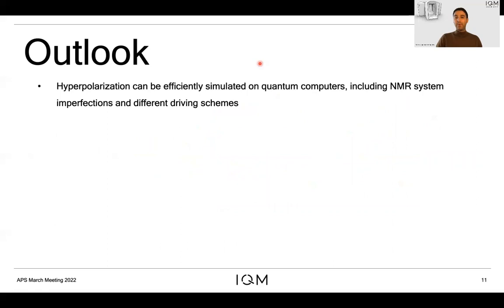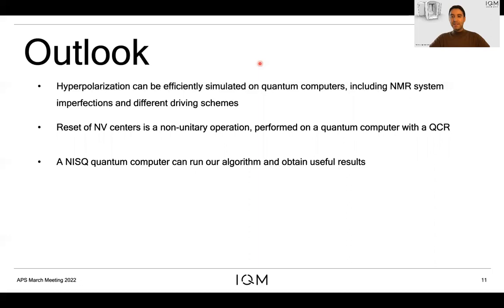Let me sum up the main points of my talk. We have chosen the hyperpolarization problem within the field of nanoscale NMR as a suitable candidate to be simulated on a quantum computer, but many other problems within nanoscale NMR have similar structure and therefore could also be solved by similar techniques. The hyperpolarization problem requires to do a reset which is a non-unitary operation, but we perform that with a QCR at IQM, and a noisy quantum computer could still run these techniques as we have shown with our simulations.